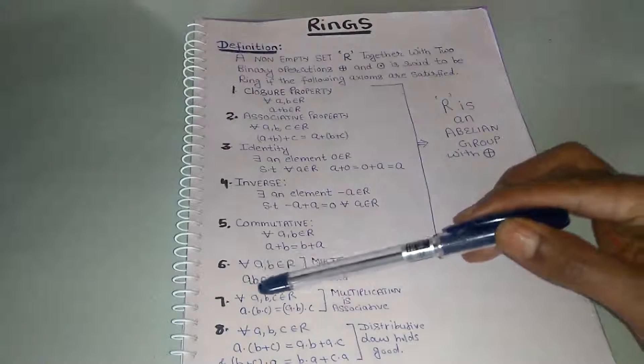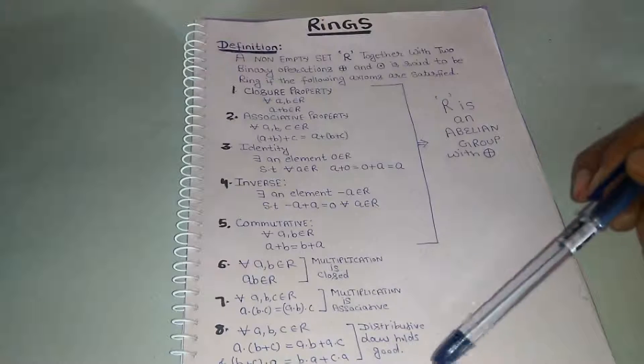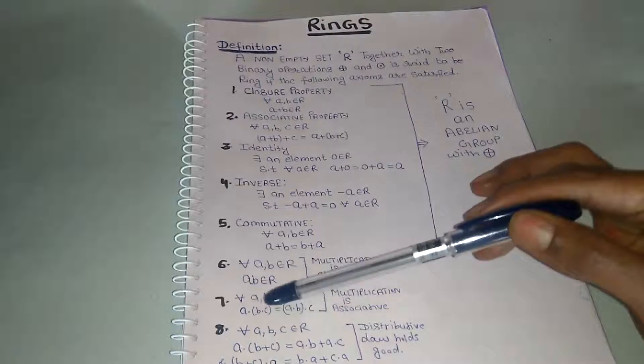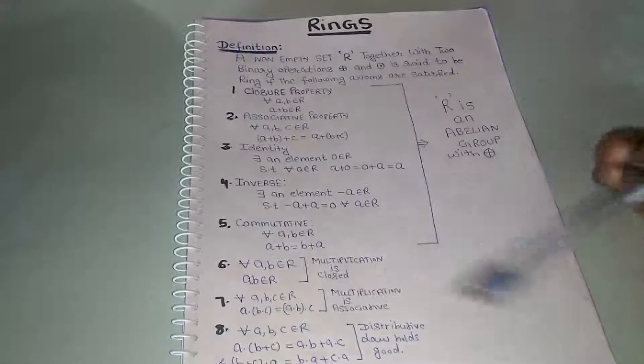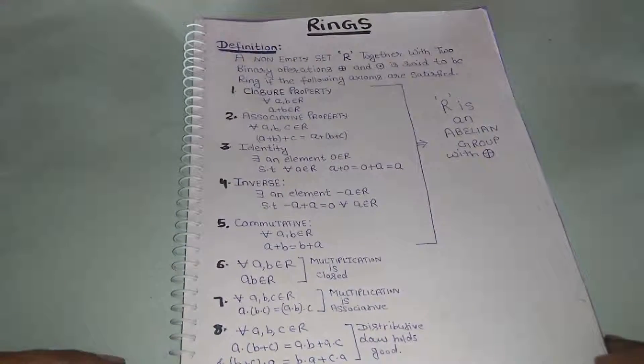Seventh one: for all A, B, C belongs to R, if we have A dot (B dot C) is equal to (A dot B) dot C, meaning multiplication is associative.